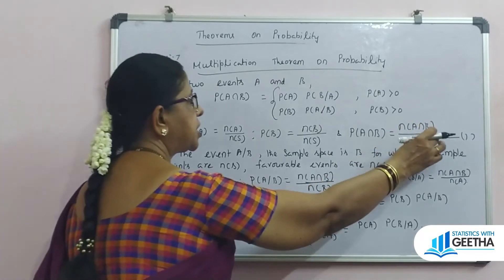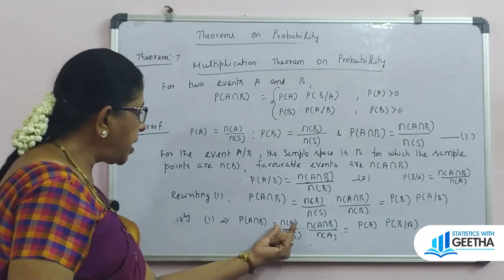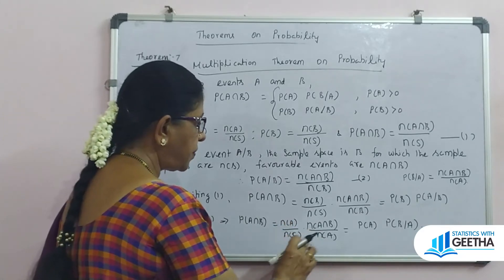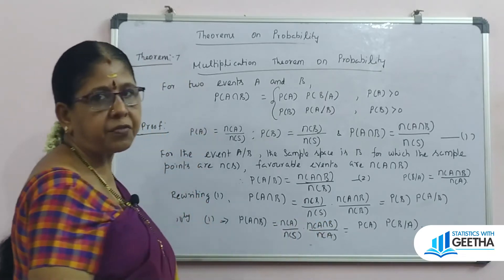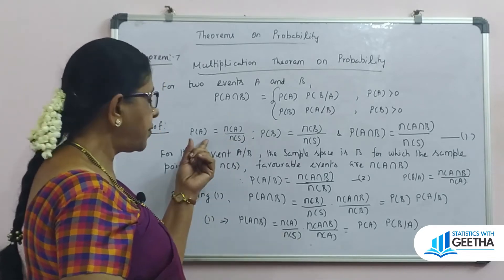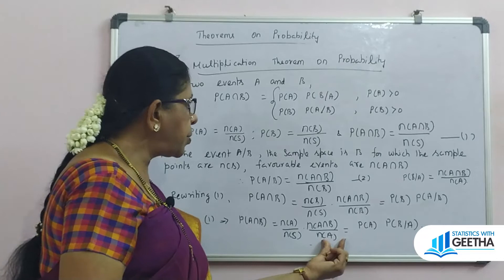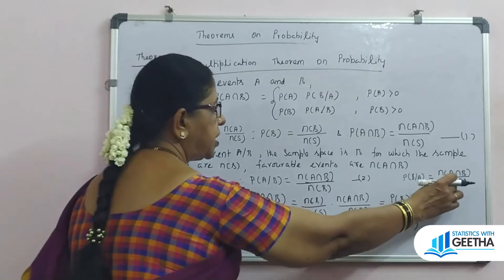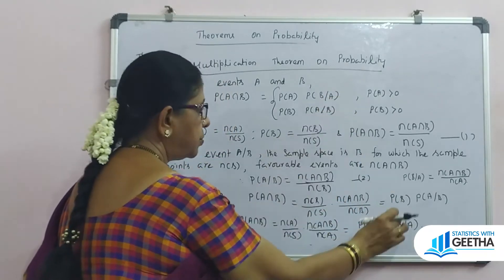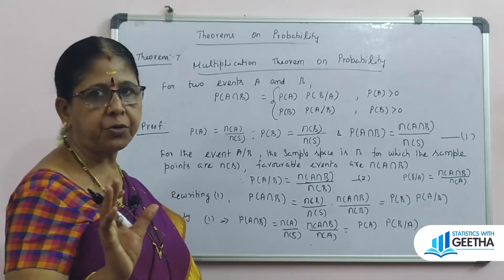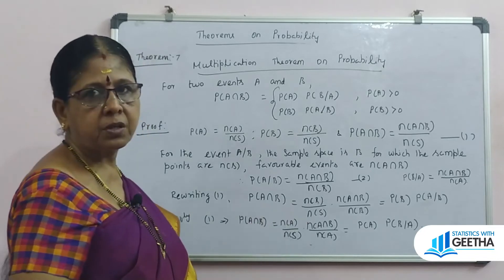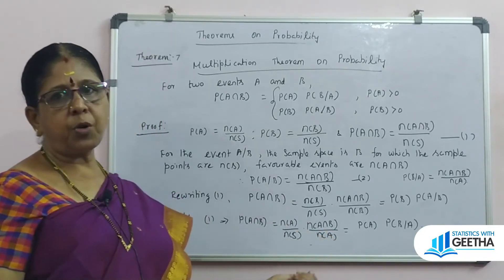To prove the other form, n(A intersection B) divided by n(S) is rewritten by multiplying and dividing by n(A), giving n(A)/n(S) times n(A intersection B)/n(A), which equals P(A) times P(B|A). This is the mathematical proof of the multiplication theorem on probabilities — covering addition theory, mathematical theory, and multiplication theory, extendable by mathematical induction for N events.